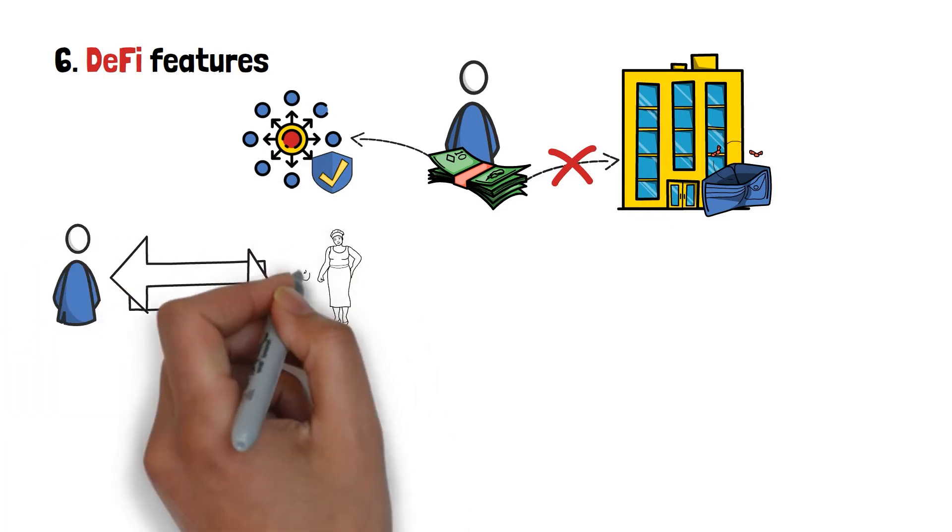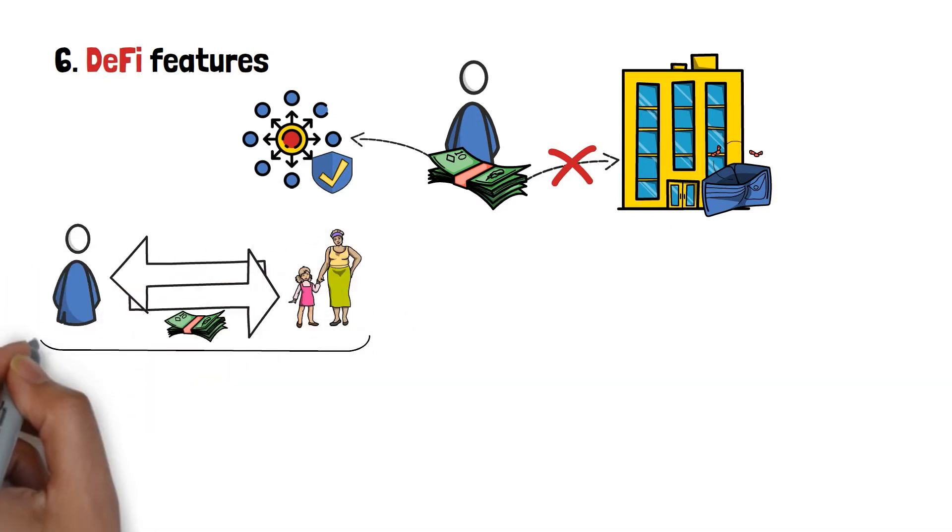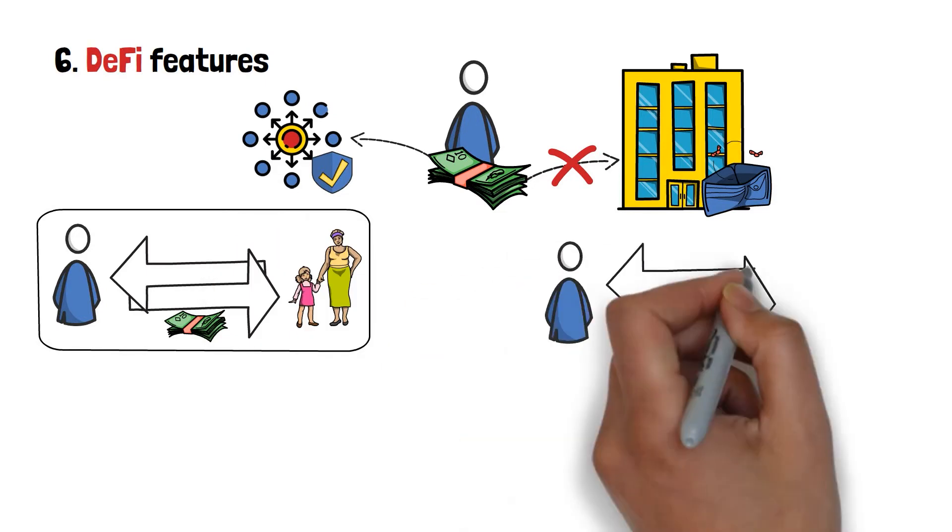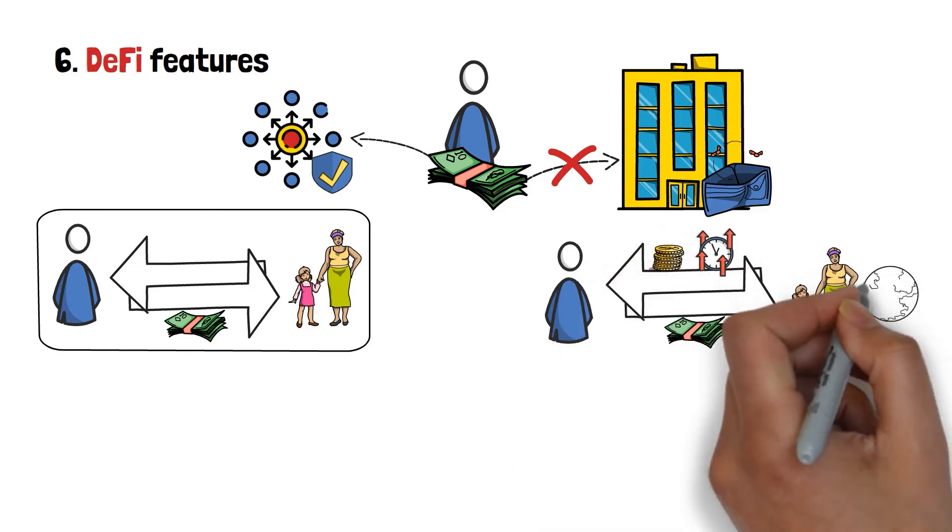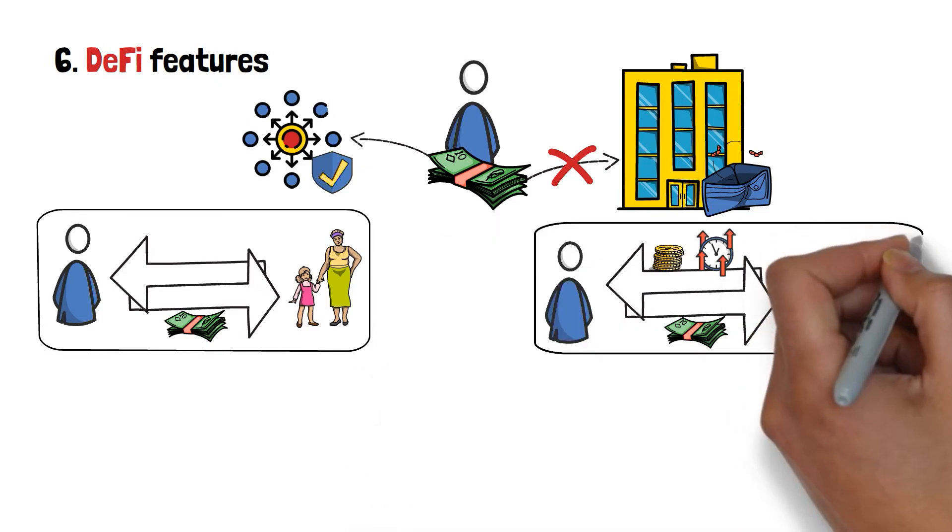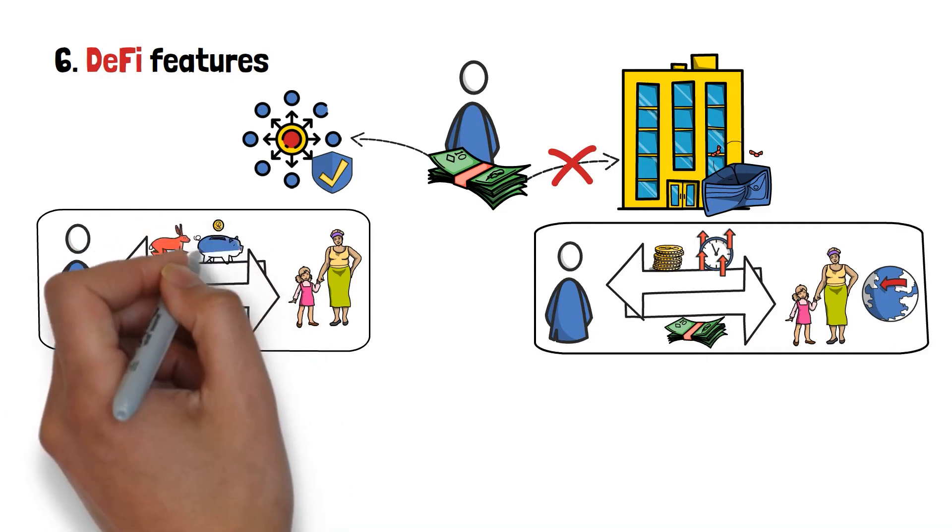Decentralized finance also makes it much cheaper and faster to send money to your friends or relatives, or anyone else. With traditional banking institutions, you'll have to pay a, usually, high transaction fee, and wait for a few days for the money to reach your friend's bank account, especially if they're located on the other side of the world. DeFi makes transactions happen in a matter of seconds, and tends to cost a fraction of the fee that you'd pay otherwise.